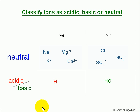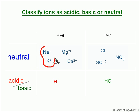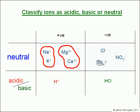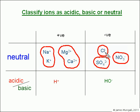We can classify ions as being acidic, basic, or neutral — and neutral I'm thinking of as being unreactive — and there are quite a few unreactive neutral ions. We've got the Group 1 metal ions, the Group 2 metal ions; we tend to think of them as being neutral and unreactive in terms of acid-base chemistry. For the negative ions, we've got the chloride ion, the sulfate ion, the nitrate ion — all of those we're going to regard as neutral and unreactive as well.